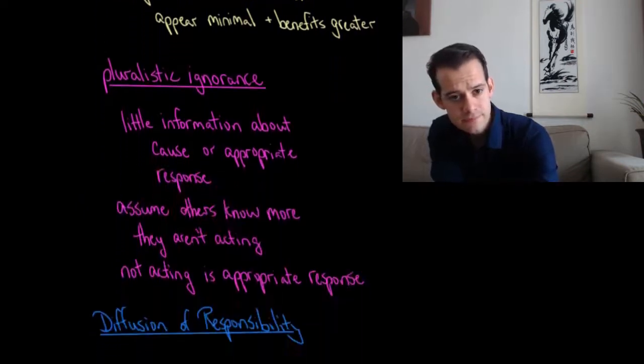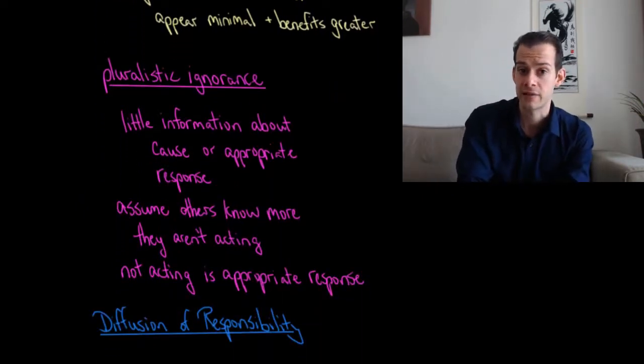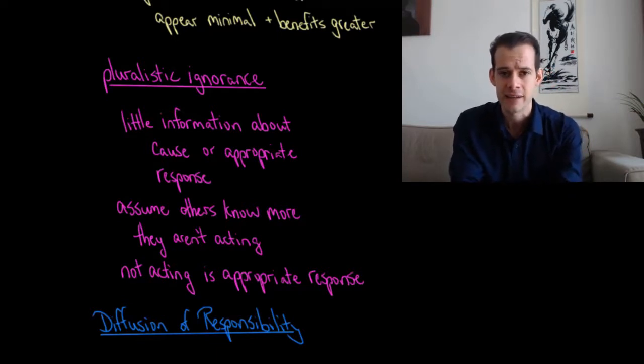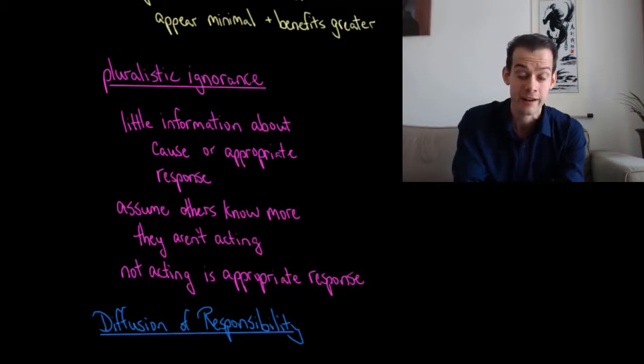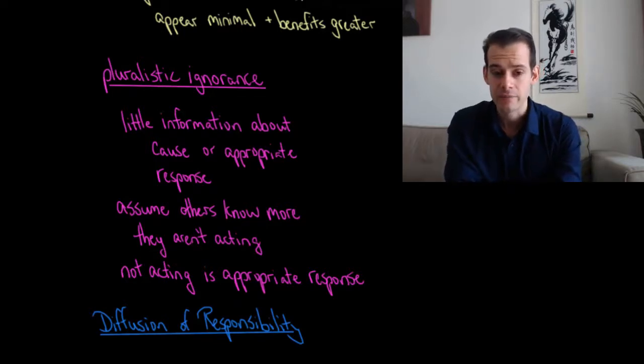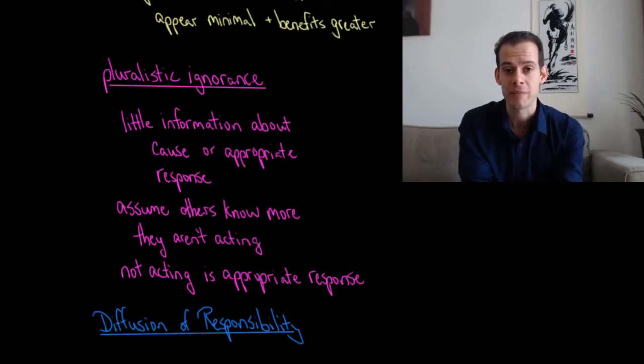Well one explanation is what's called pluralistic ignorance. This is the idea that in these situations we often have very little information. We don't know very much about the cause of these events. We don't know why there's smoke coming out of a vent. We don't know why someone's laying in the street. We don't know why someone's screaming for help, and as a result we don't know what the appropriate response is either. So we have very little information about the cause, and we also have very little information about the response.